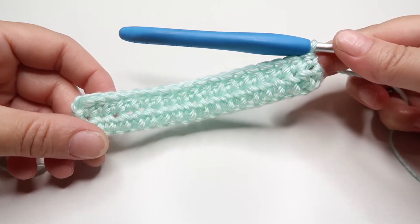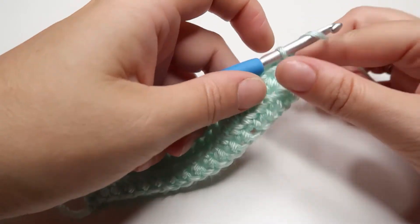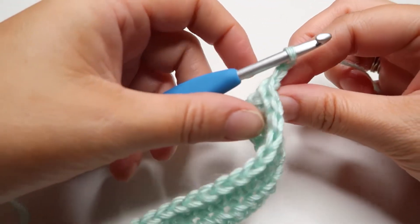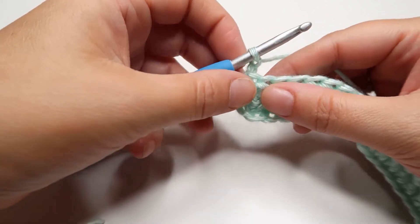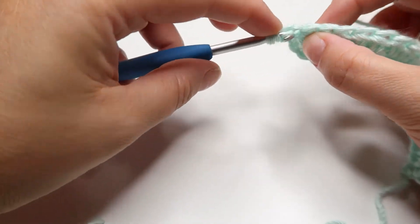And you've finished your second row. You continue doing the same thing for each additional row: chain two, turn your work, and work a half double crochet in each stitch.